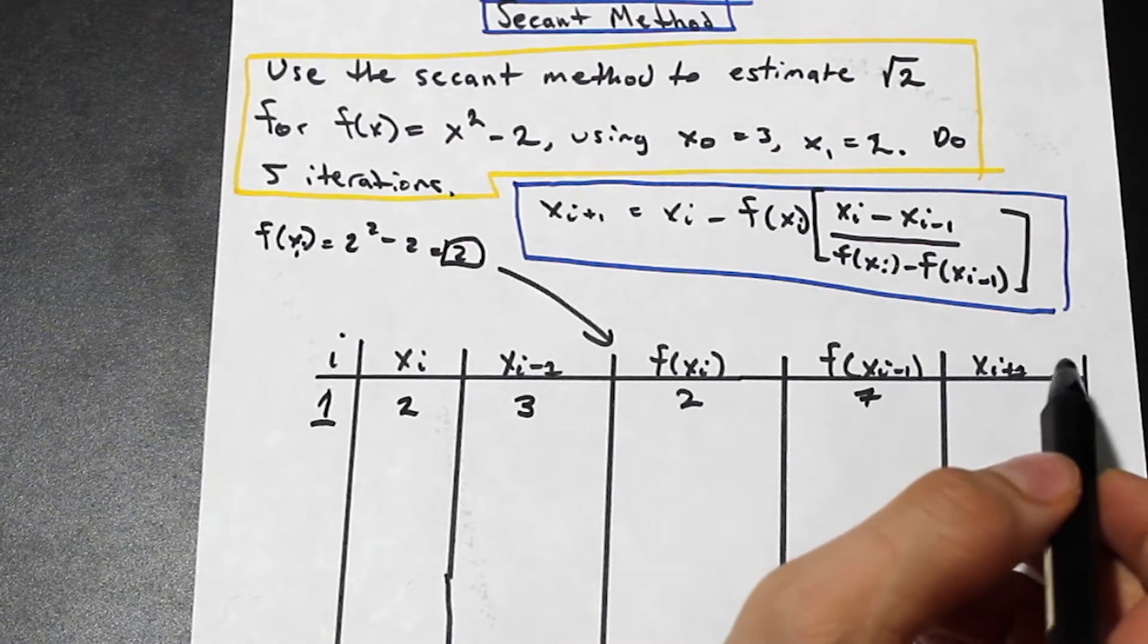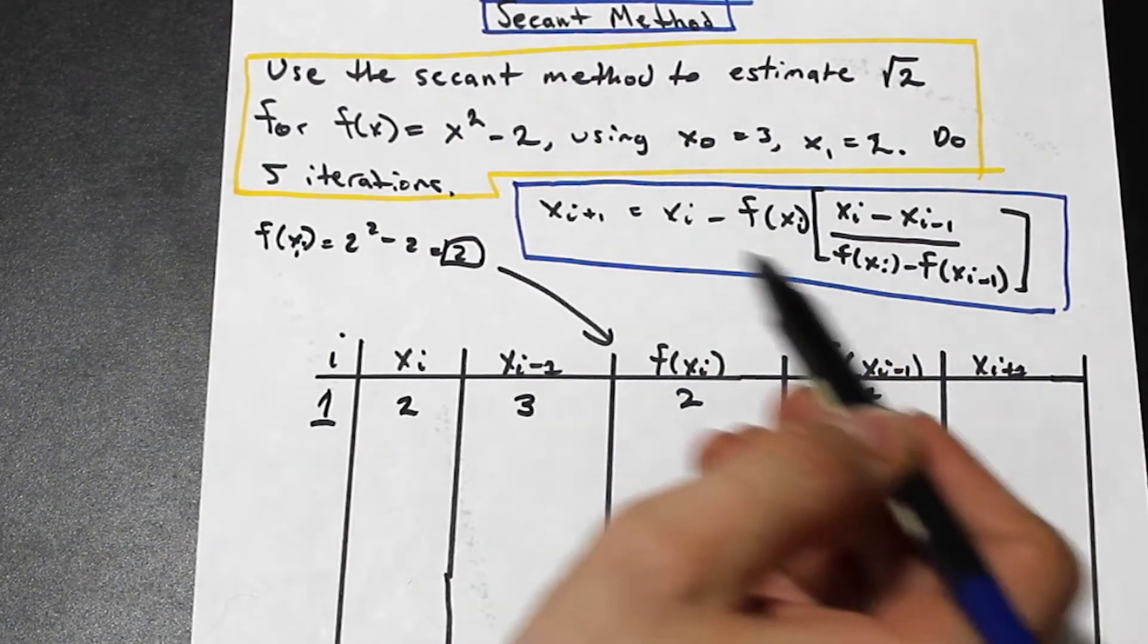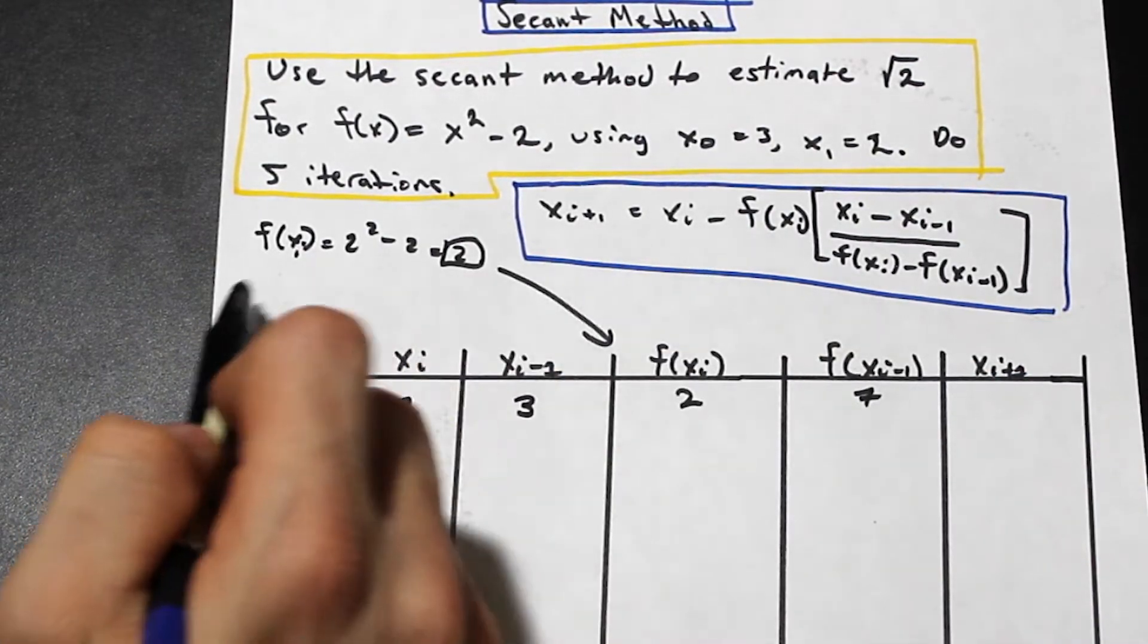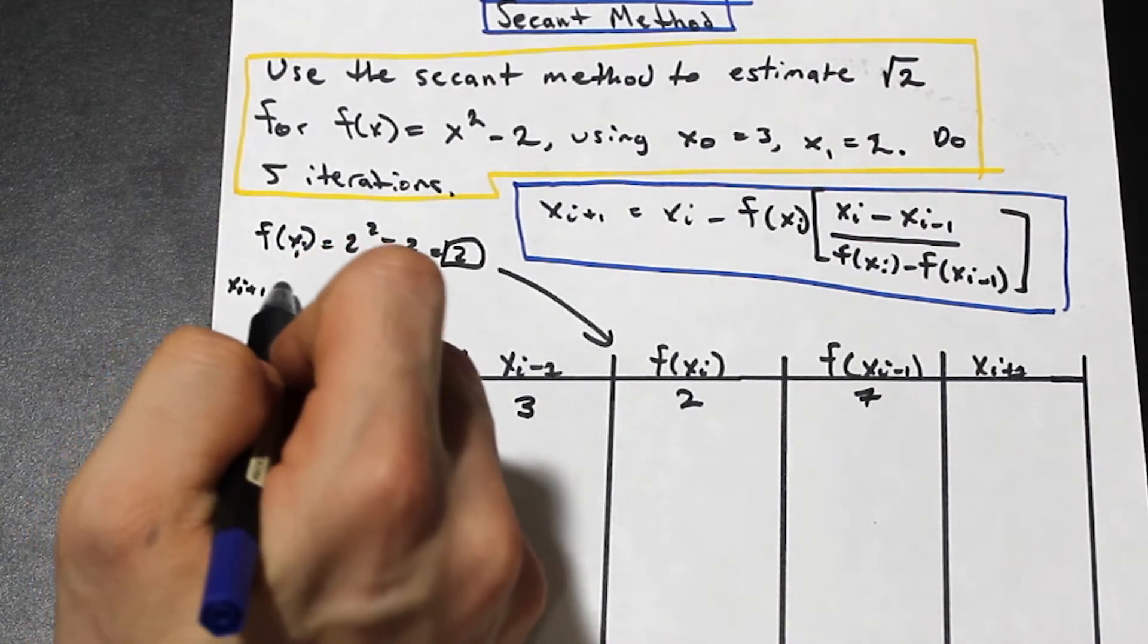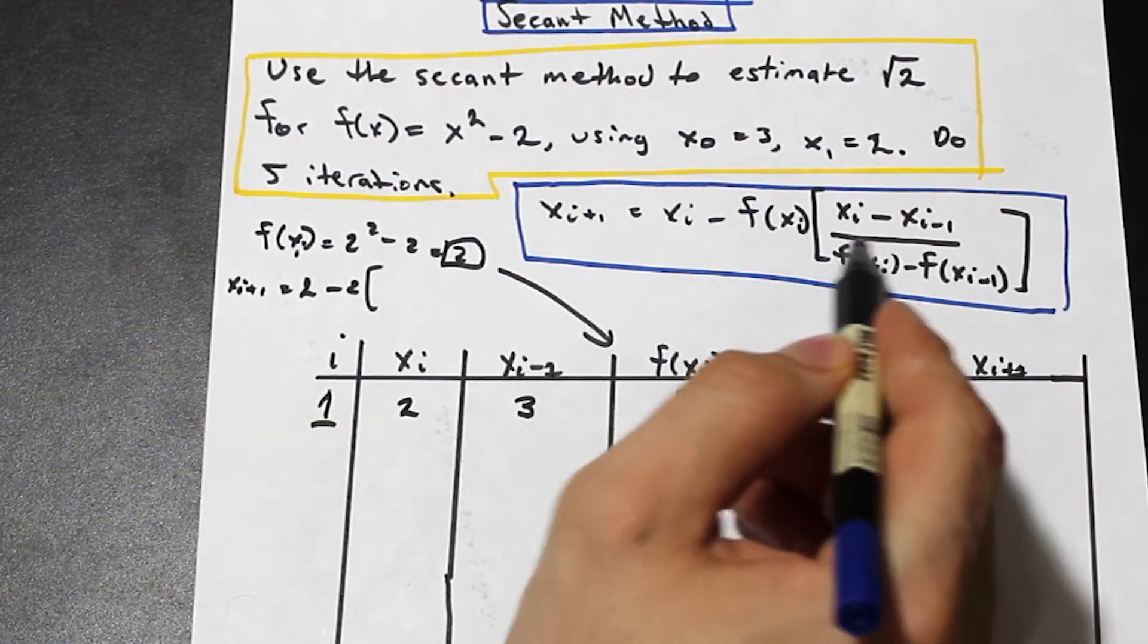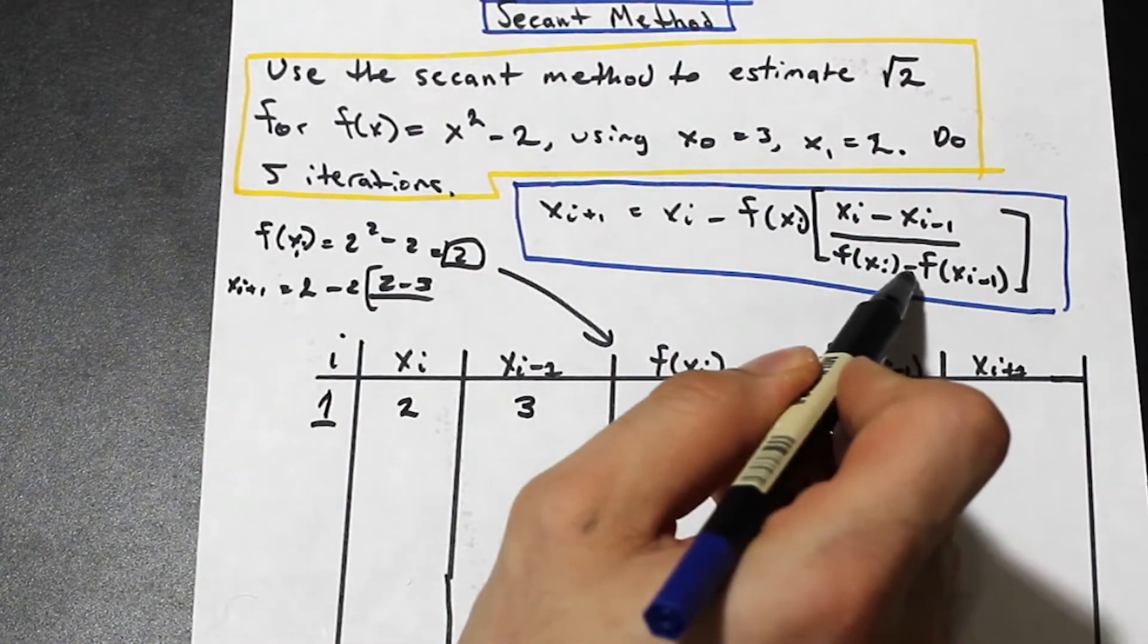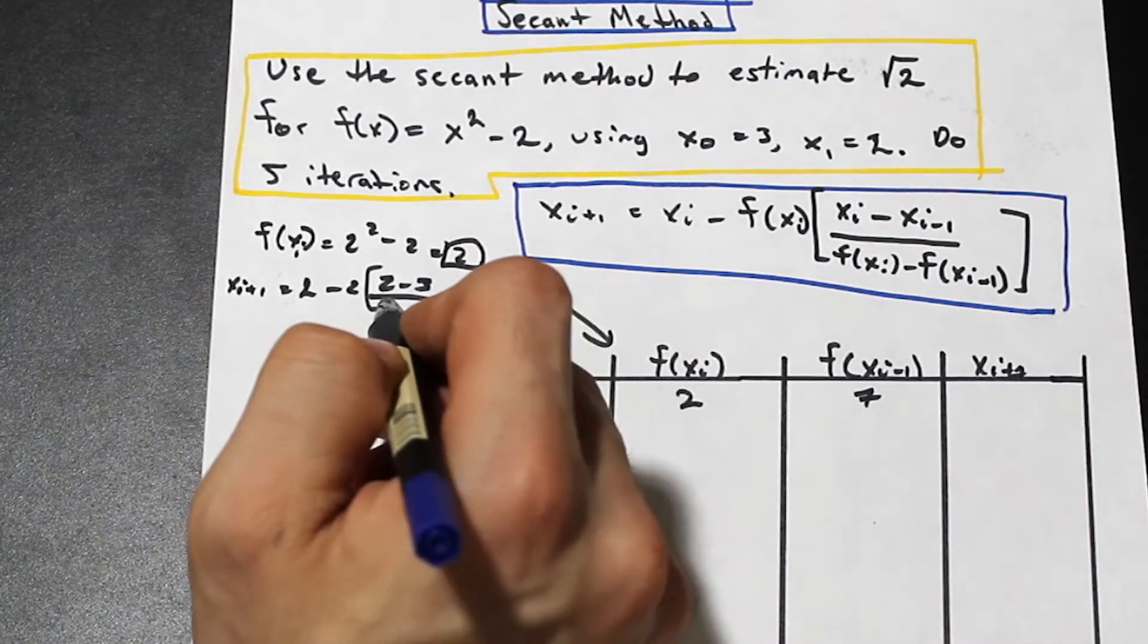And then xi+1. Essentially what you're going to do is you're just going to plug these values into this formula, and you're going to arrive at an answer. So the first one is going to be xi, so that's 2, minus f(xi), f(xi) is 2. And then in the bracket we have xi minus xi-1, so we have 2 - 3 over f(xi) - f(xi-1). And that's just going to be 2 - 7.